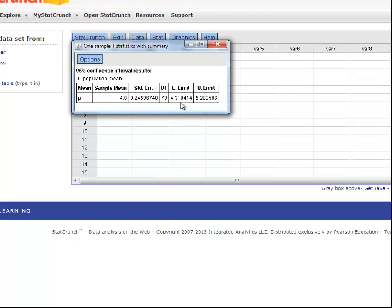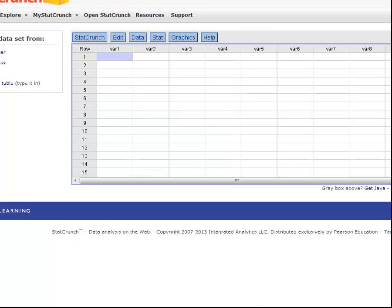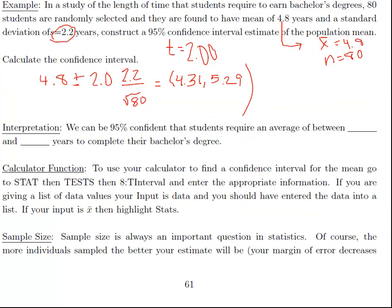Our confidence interval here is 4.31 up to 5.29. So there's a couple different options for you to get the confidence interval. You can do it by hand using the t distribution table, you can do it on your TI calculator, or you can do it pretty easily in StatCrunch as well.